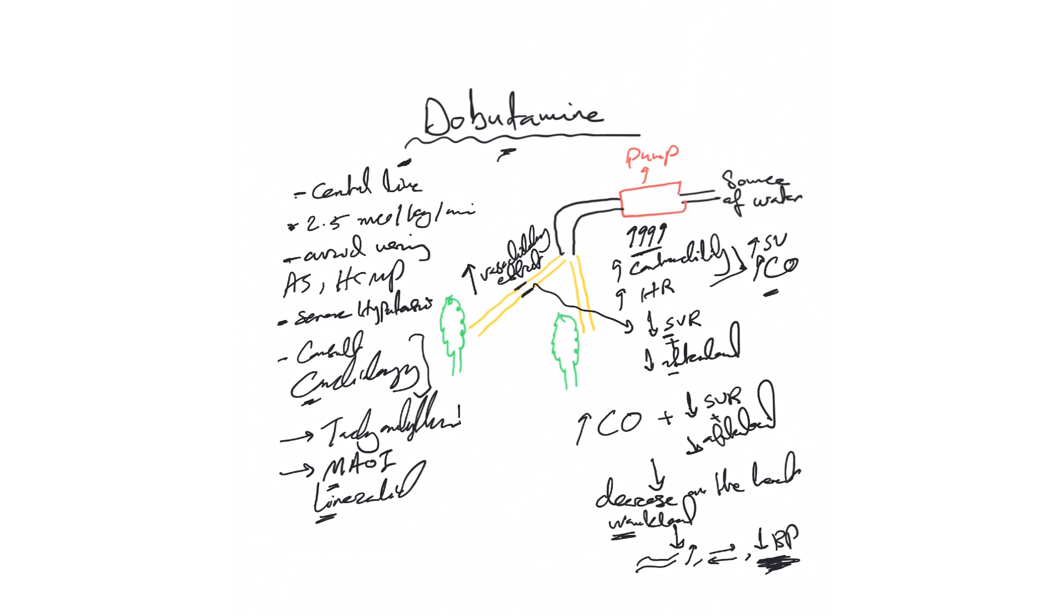Very important to remember, last thing: dobutamine or inotropes are used with low EF. So if you have somebody with heart failure but preserved ejection fraction, this medication should not be used. And remember the source of water, never forget the patient can be dry, especially if you give too much diuretics. You need to pay attention to the volume status of that patient.